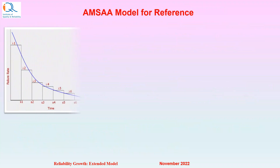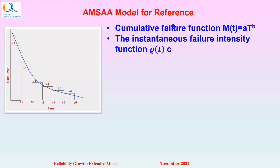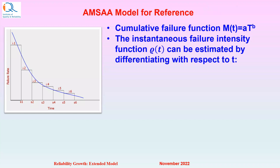Let us remember the Crow-AMSAA Model for reference. The cumulative failure function m(t) is given by a·t raised to b, where a and b are constants. The failure intensity function ρ(t) is obtained by differentiating this cumulative function and is given by ρ(t) = a·b·t raised to b minus 1. We have seen this in the previous video.